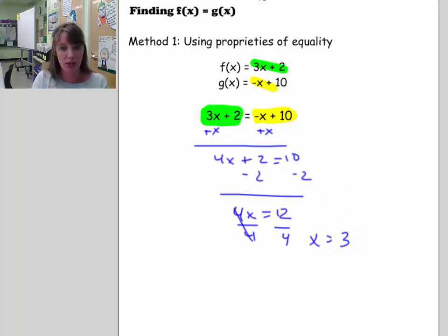Oh, I made a mistake right here where it should have been 8. So 10 minus 2, of course, is not 12. It's 8. And 8 divided by 4 is x is equal to 2.